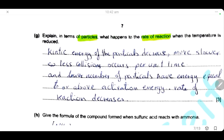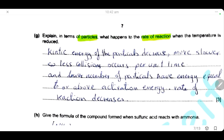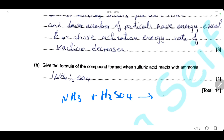When temperature is reduced, the kinetic energy of particles decreases, so they move slower. This causes fewer collisions per unit time, and fewer particles have energy equal to or above the activation energy. Therefore, the rate of reaction decreases. When sulfuric acid reacts with ammonia, the product formed is ammonium sulfate — the only product of this reaction.